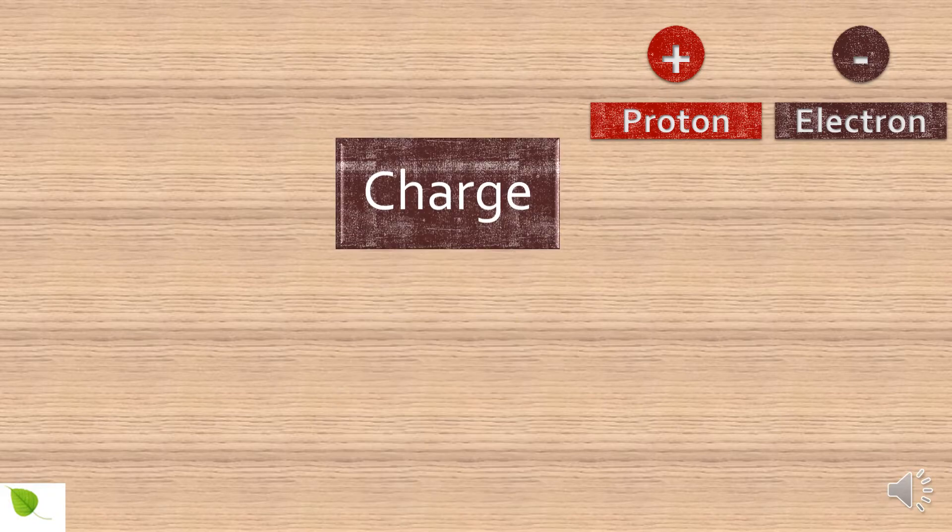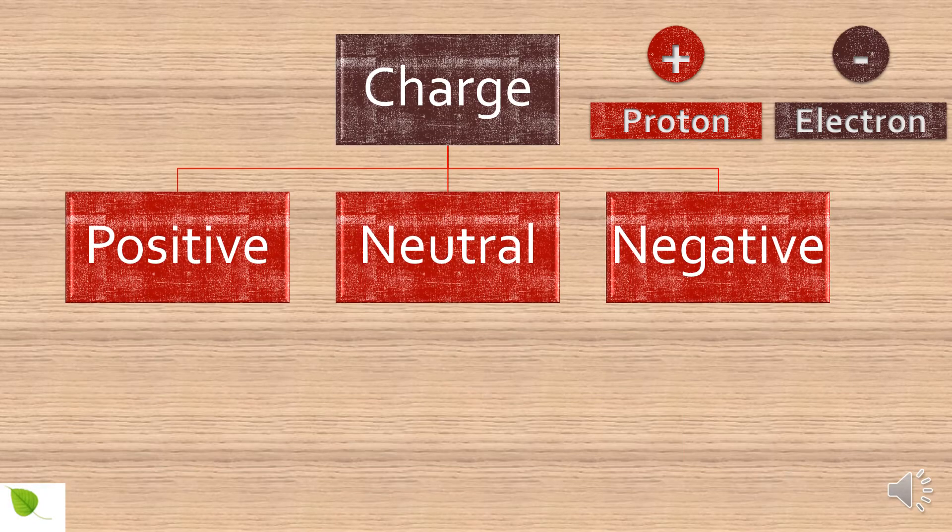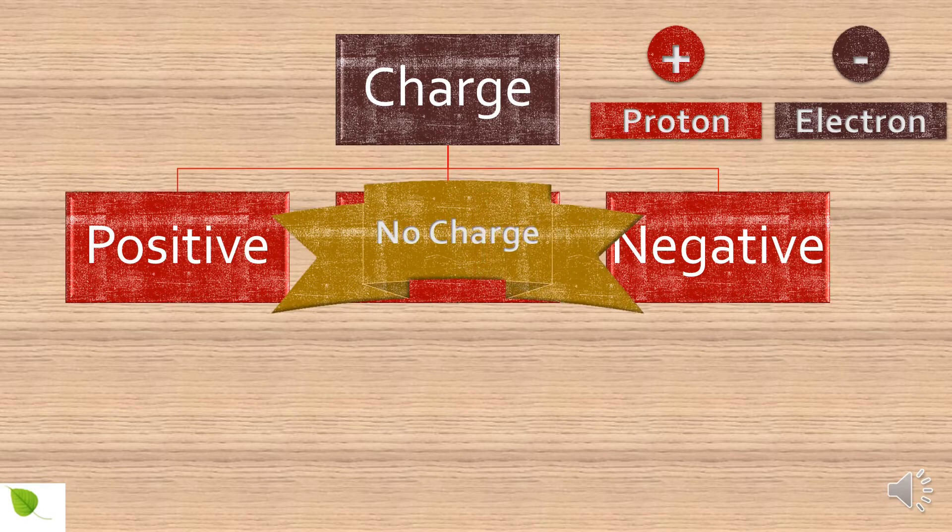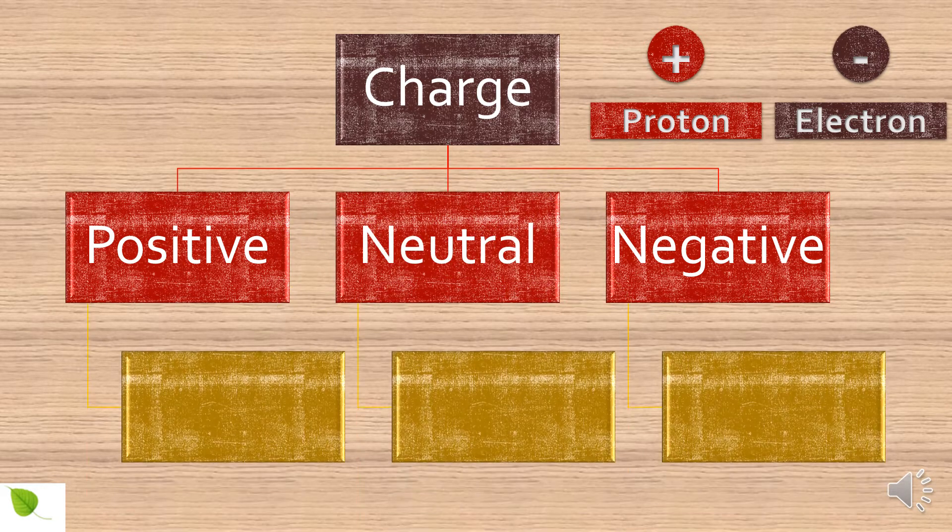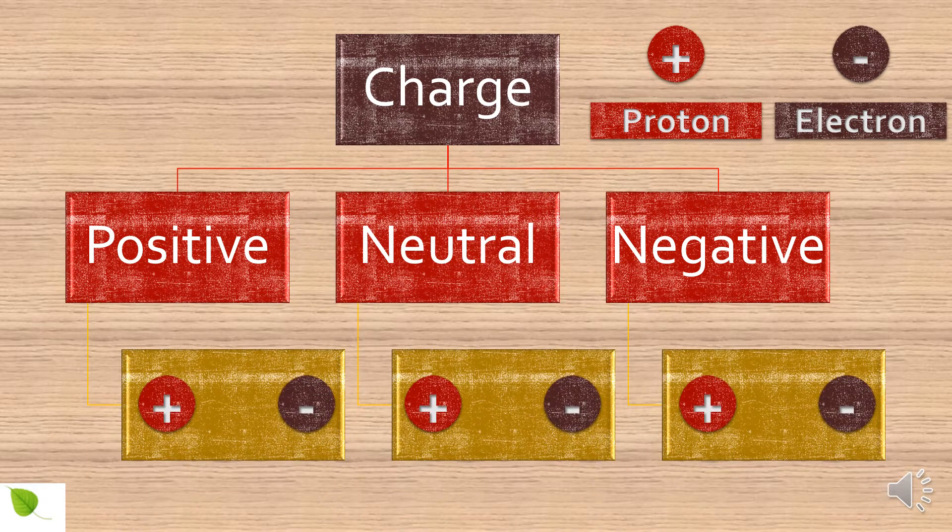Protons are positive and electrons are negative. Now charges have two types: positive and negative. The term neutral is actually no charge at all. These depend on the relation between protons and electrons.